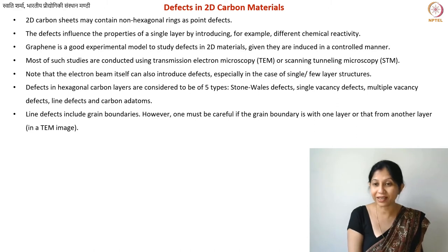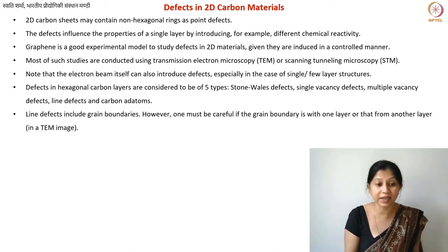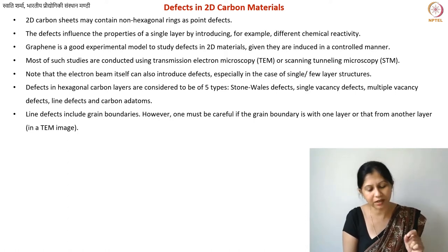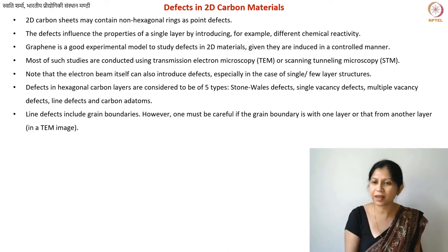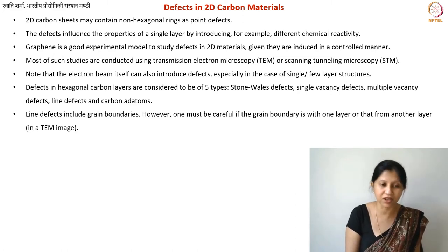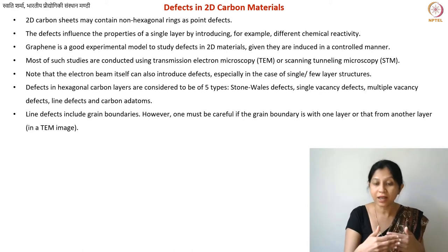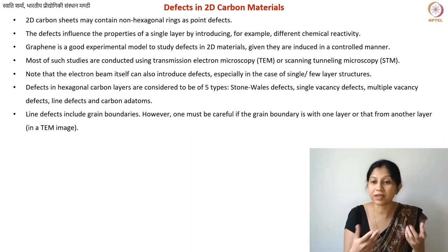There are two ways of understanding these defects. One is theoretically: if the crystal structure can even contain such a defect and how much energy it adds. Those things can be understood theoretically. When you want to understand defects chemically or experimentally, you will often perform chemical reactivity experiments, but it's very difficult with single layers — you will often get only the average effect of the entire material. So what you often do is TEM and STM imaging.